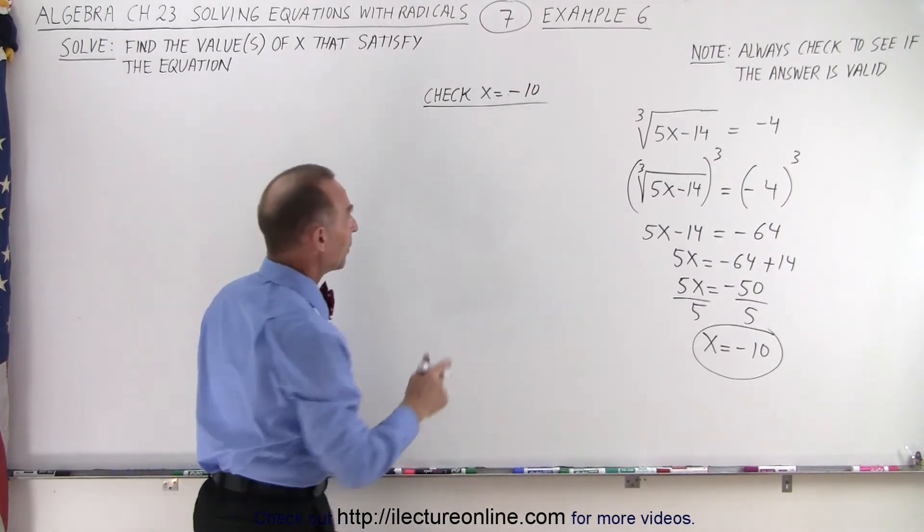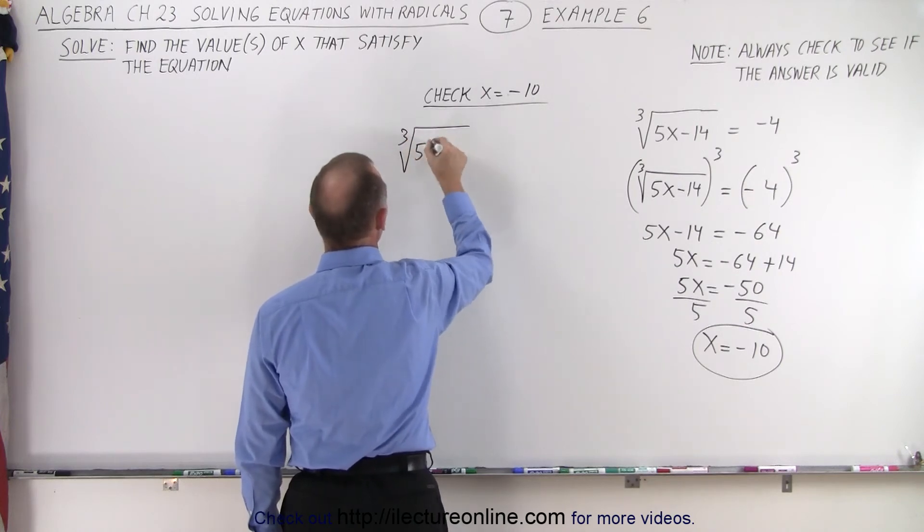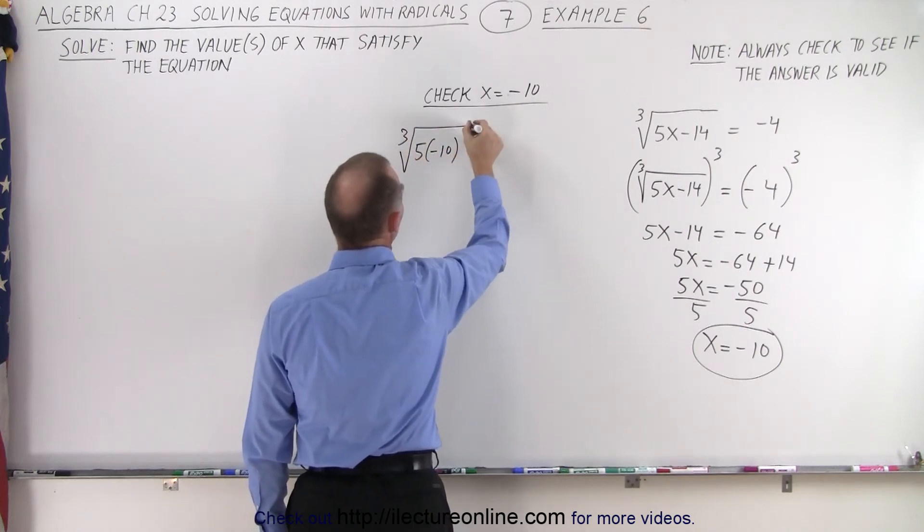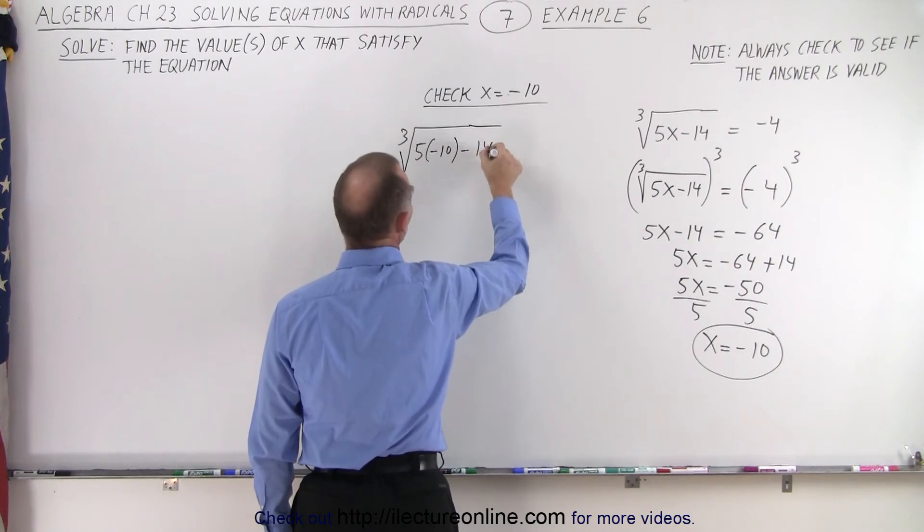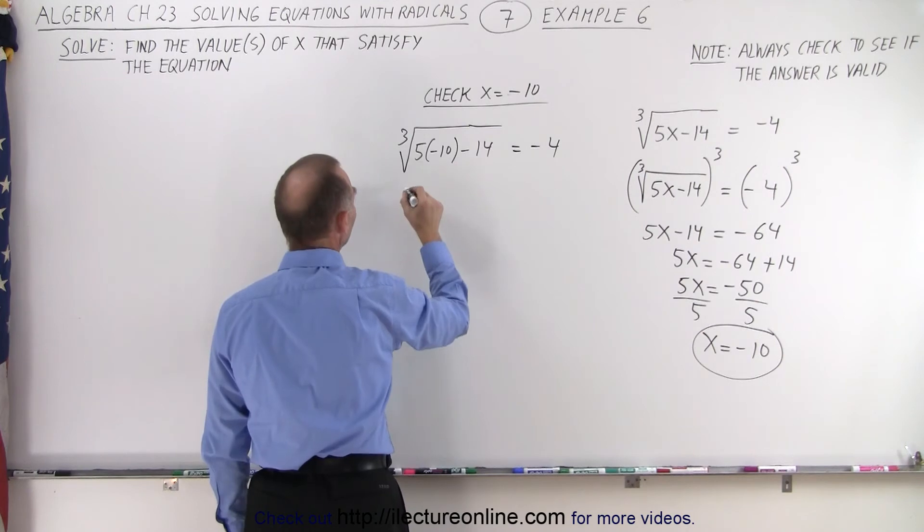Let's do that and see what happens. On the left side, we get the cube root of 5 times negative 10 minus 14. On the right side, we get negative 4. Let's simplify that.